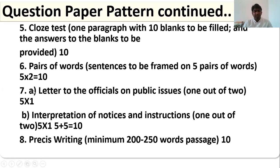Seventh section has been divided into two subsections, A and B. Section A, letter to the officials on public issues. You have to write a letter to one of the public officials. They will give you two letters, out of two you have to choose one. Second subsection B, interpretation of notices and instructions. In public places you see so many instructions. For example, no parking, no smoking, mobiles prohibited, no trespassing. They will give you two such public instructions.